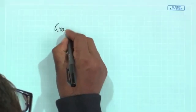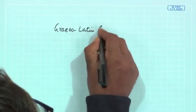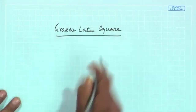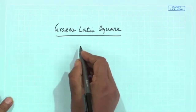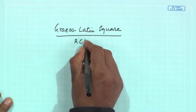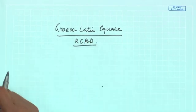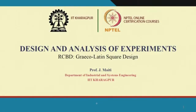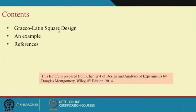Welcome. We will now discuss the Graeco-Latin Square — this is a special type of design in randomized complete block design. Today we will cover: what is Graeco-Latin Square design, its statistical analysis, and then a tutorial example. The reference textbook is Montgomery's Design and Analysis of Experiments.